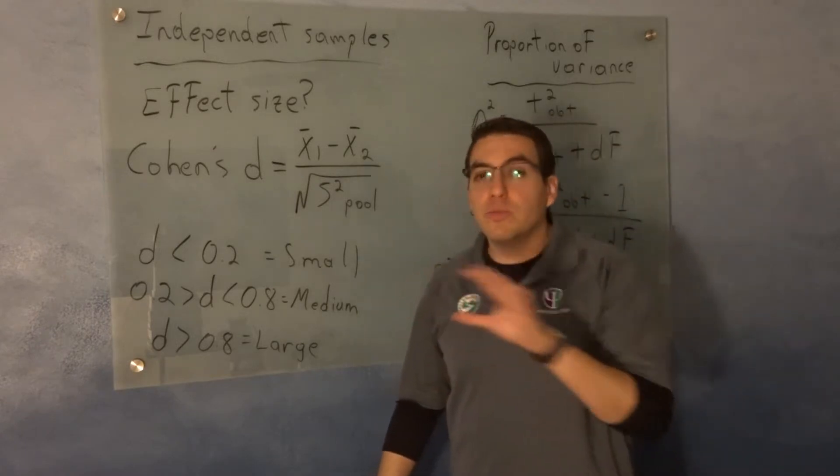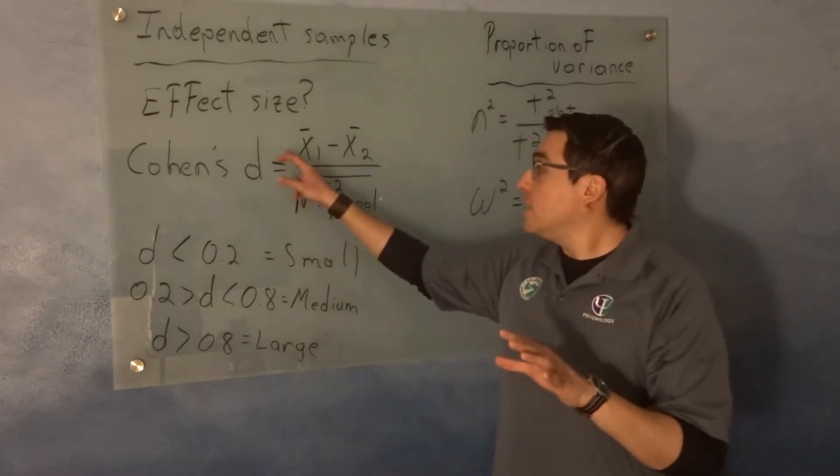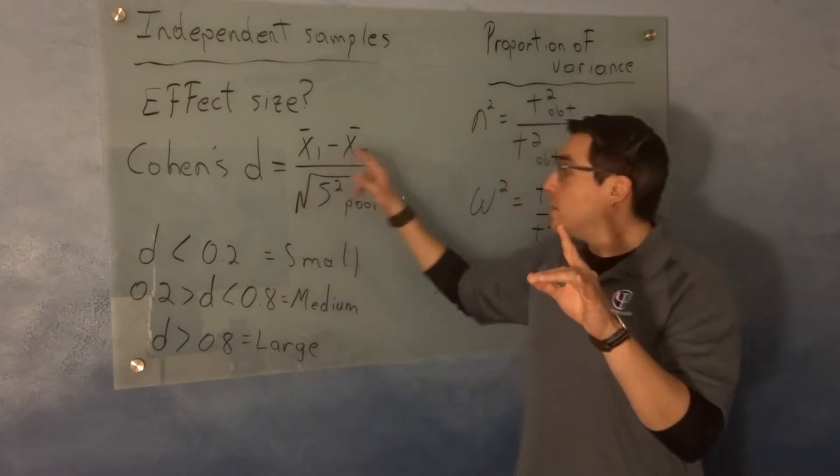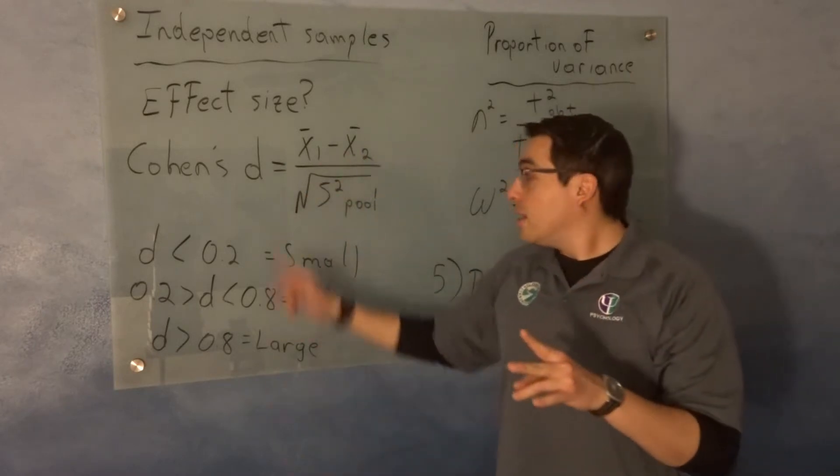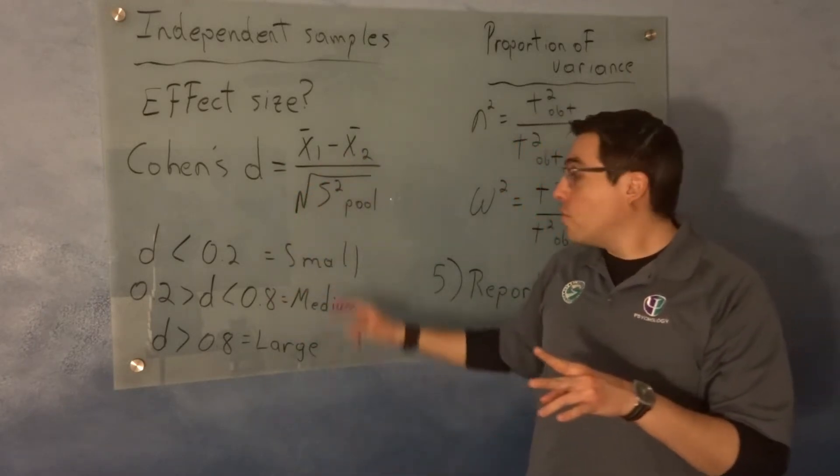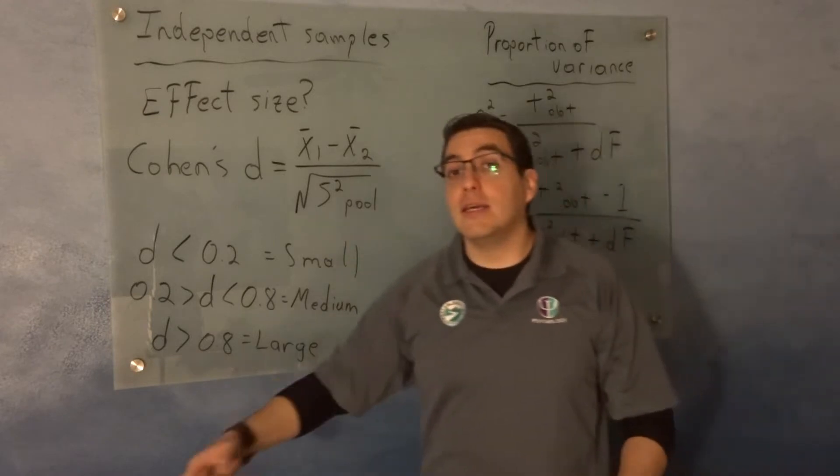For Cohen's d, it's super simple. You're going to take the mean from the first group, subtract it from the mean in the second group, and you're going to divide that over the pooled variance which we already did before.